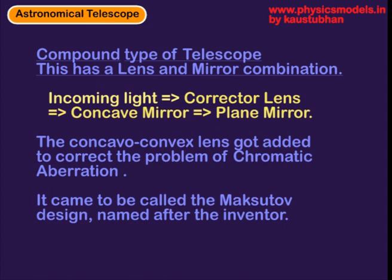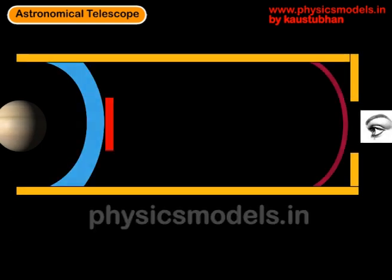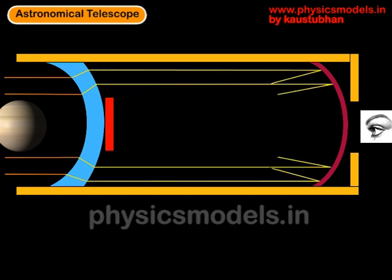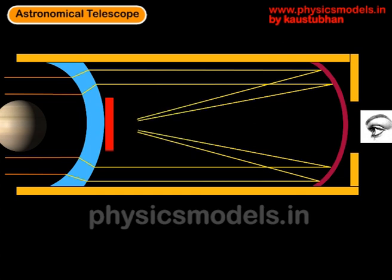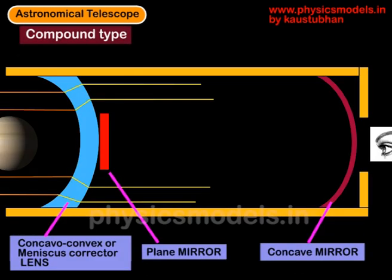This is called the Maksutov design. We have the planet and the telescope tube as usual, but here we have a concavo-convex lens. The rays from the planet come in to the concave surface, diverge, and again converge at the convex surface of that lens. After that they become parallel, go to the concave mirror, get reflected, hit a plane mirror, and back to the eyes of the observer.